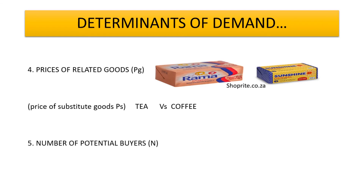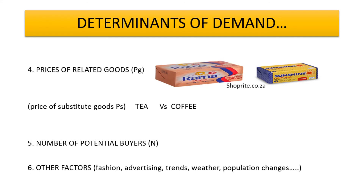The fifth determinant is the number of potential buyers. If the number of potential buyers is less, then the quantity demanded is going to be less also. Lastly, we talk about all other factors — that includes fashion, advertising (sometimes you buy something simply because you saw it advertised), trends, and weather. When it's hot, people are willing to buy ice cream, but if it is cold, people may be buying tea, coffee, hot chocolate, and so on. Another point is population changes — when there are more people, demand is likely to be high; when there are fewer people, demand is likely to be less.